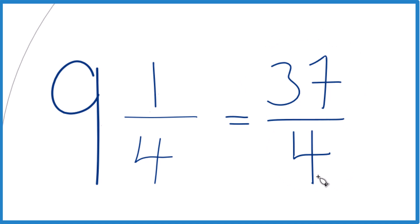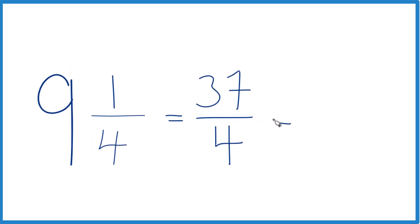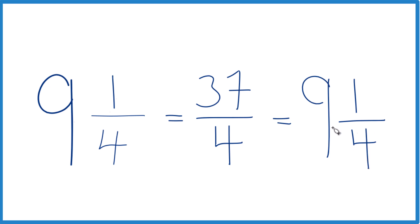We can even check our work here, because 4 goes into 37 — 9 times 4 would be 36 with just one left over. Bring the 4 across and we have 9 and 1/4 as our mixed number, which is what we started with, so we know we did it right. Remember that 9 and 1/4 is equal to 37/4. They have the same value; it's just that we're representing it here as an improper fraction.